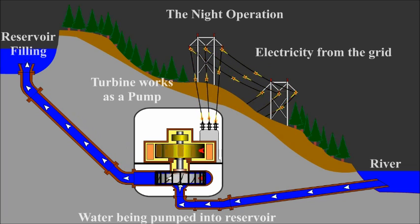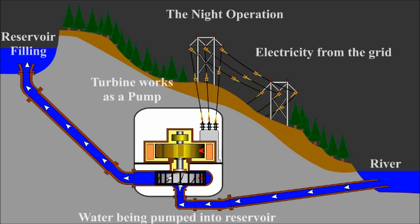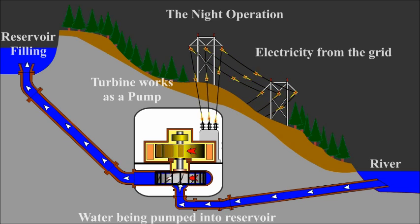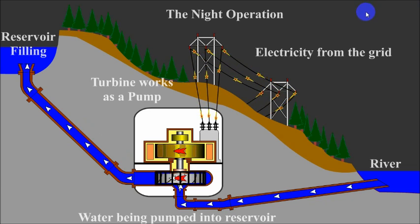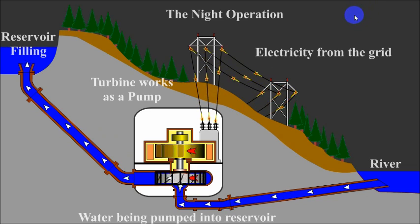In dams, the water always flows in one direction — from high to low. However, in pumped storage systems it flows in both directions. During the night the water is pumped to high elevation, and in the daytime it is allowed to flow, by passing through the turbine, to the low elevation.